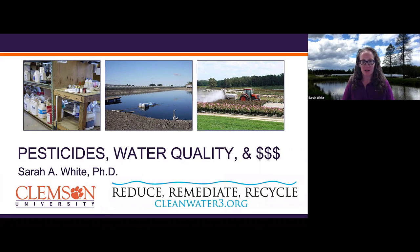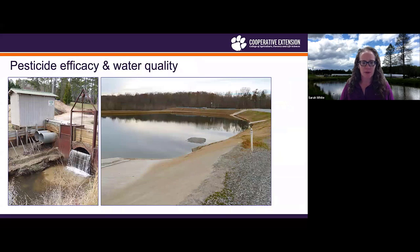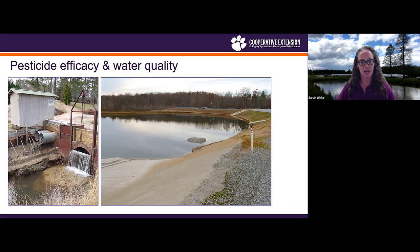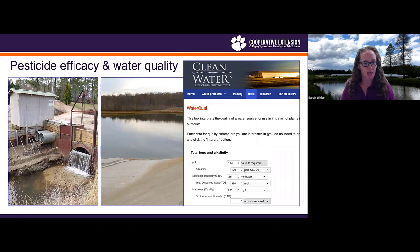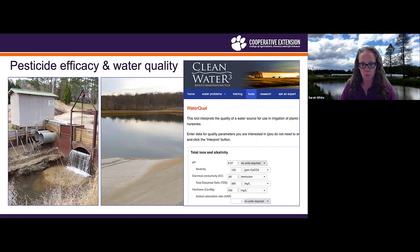Thanks, Paul. It's definitely a pleasure to be here today and to get to talk to you and to everybody who eventually watches us about pesticides and how water quality influences how they do what we want them to do. The first step in thinking about pesticides and water quality is actually knowing where your water source is. If you're pulling from a surface water, recycling irrigation water, or using a groundwater source, each of those sources will have different baseline chemistries that will influence how effective your pesticides are. The water quality app on the cleanwater3.org website is one of those helpful tools to help you understand your water quality.